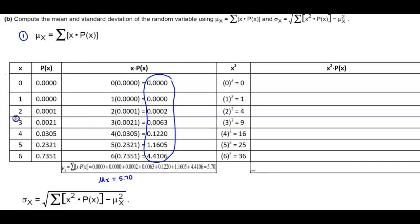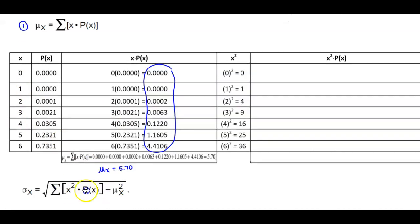To find the standard deviation, we need this formula: the square root of the sum of x² times P(x) minus the mean squared. First, we create a column of x squared values. For x equals 0, 0 squared is 0. For x equals 1, 1 squared is 1. For x equals 2, 2 squared is 4. For x equals 3, 3 squared is 9. For x equals 4, 4 squared is 16. Then 5 squared is 25, and 6 squared is 36. Then we multiply each x squared value by its probability.